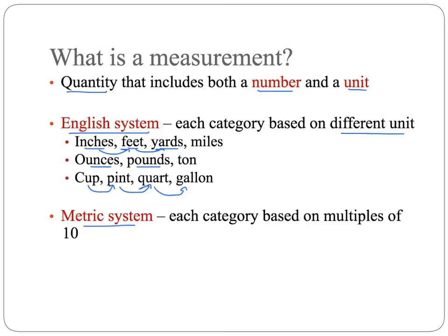The metric system is used by scientists based on the international agreement from 1960, and it is much easier to work with because each category is based on multiples of ten. And so when you're talking about multiples of ten, you're talking about moving a decimal point one place to the right or to the left, and it's much easier to convert.